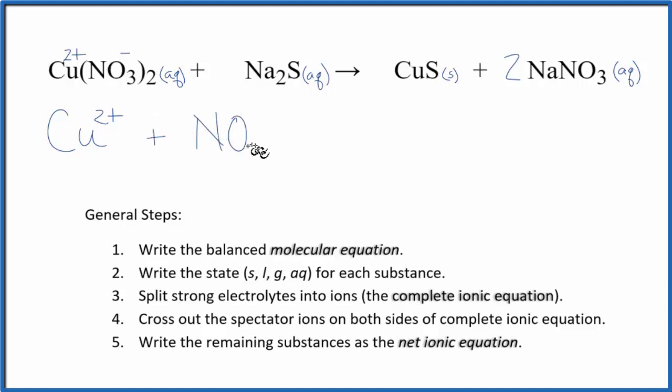Nitrates, NO3 minus, and this 2 means we have 2 of them. Put a coefficient of 2. We have sodium group 1, 1 plus sulfur, that's 2 minus.